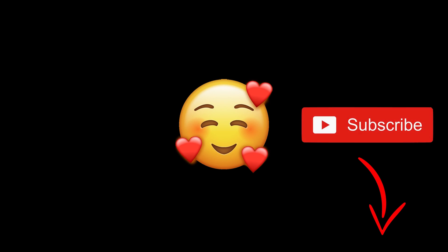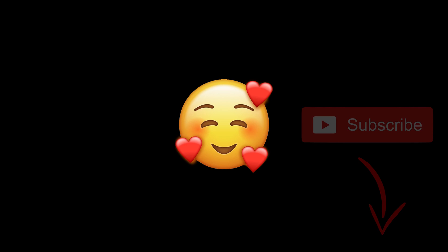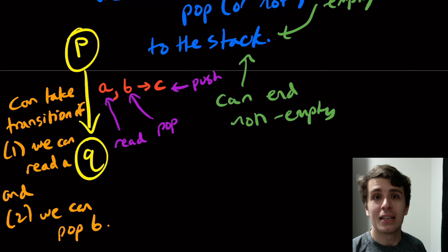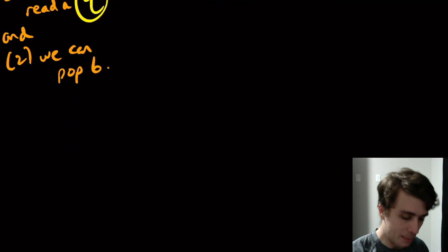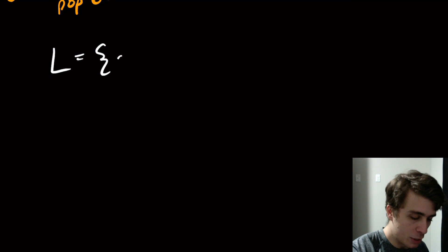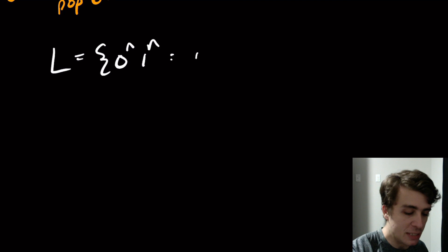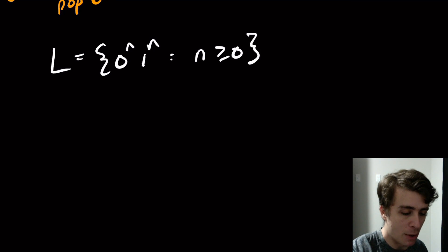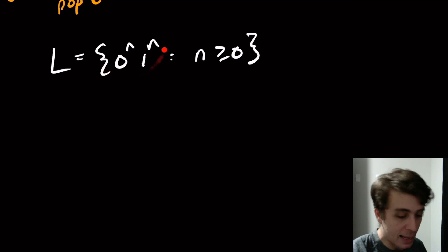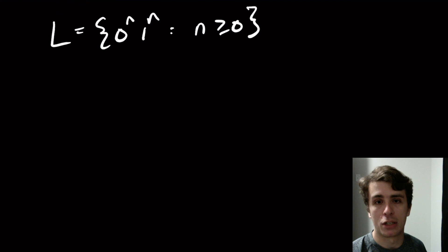We've just talked about pushdown automata, so let's do a quick example. We talked about the language 0^n 1^n — we actually did a grammar in the last video about this exact language, but I want to make a pushdown automaton for it.